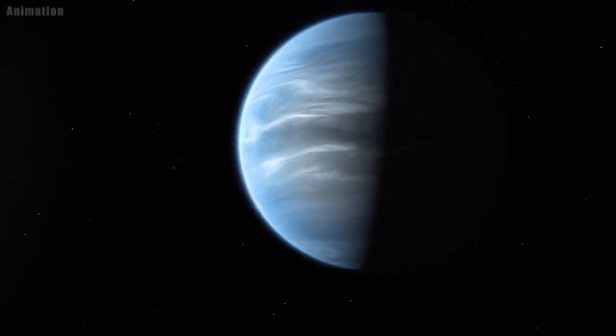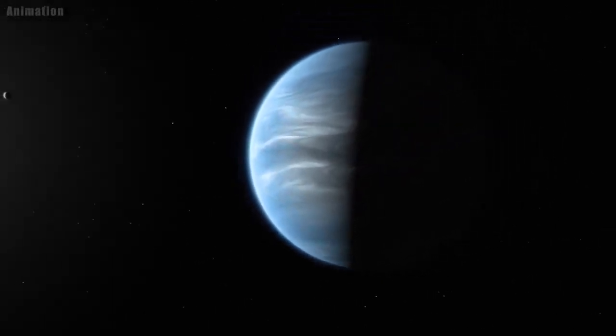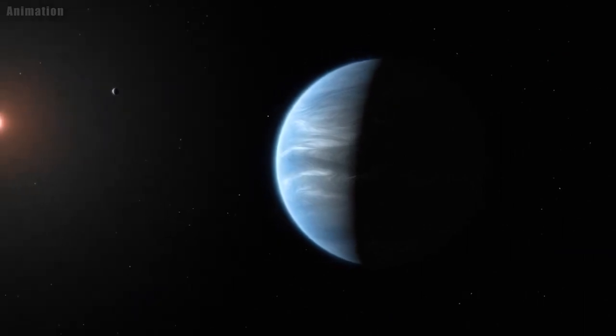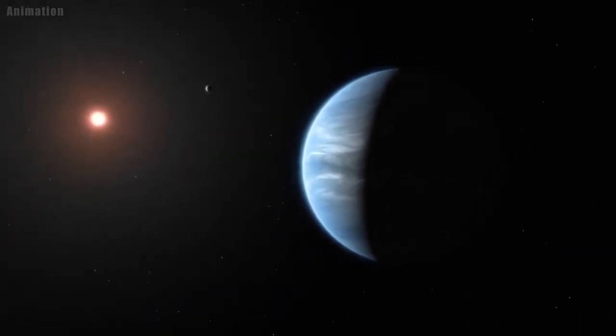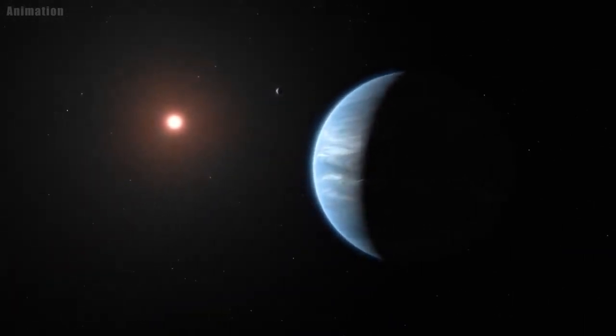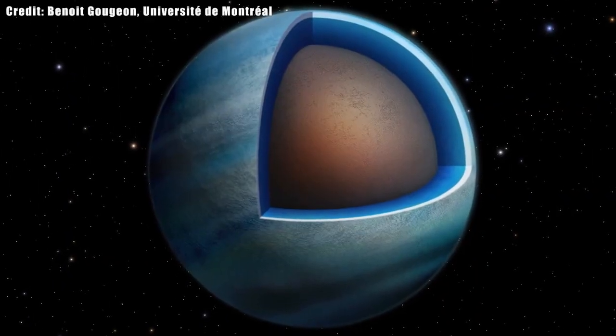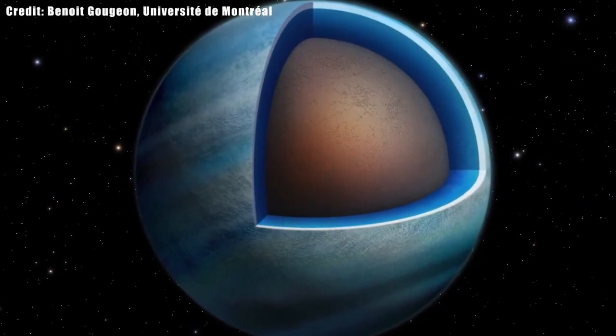Using data from NASA's Hubble and Spitzer Space Telescopes, astronomers have found evidence that two exoplanets orbiting a star 218 light-years away are water worlds, where water makes up a large fraction of the entire planet.